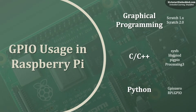These are some of the more popular ways of using the GPIO in the Raspberry Pi. There are primarily three categories: graphical programming, C or C++, and Python. You also have some other methods, but we will restrict our discussion to these methods only today.